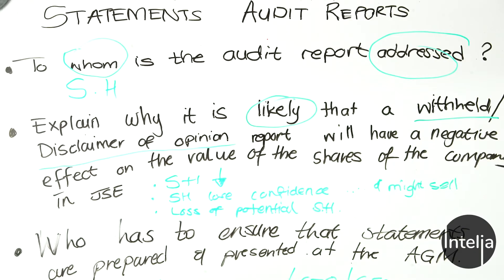Here are some pointers on how to tackle these questions. The value of the shares will decrease because if someone checks the report — which is public information — and realizes that the audit has been withheld or there's a disclaimer of opinion, those people will not feel these are good shares to hold. The share value will decrease because the JSE will take them as not in demand, and shareholders will lose confidence in the company and might sell their shares.